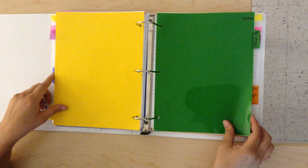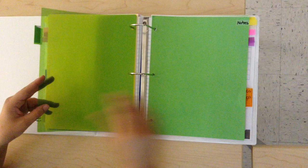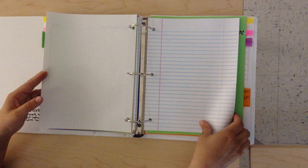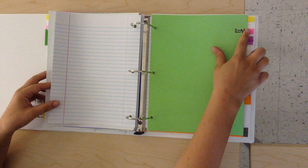You will notice that in my sample binder I have tabs. This is the easiest way for students to find the needed section. It is not required, but it is recommended. Graded work. Tests and quizzes.